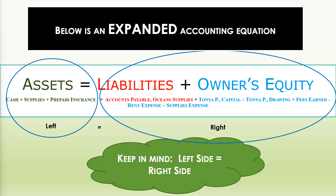You'll also see the liabilities accounts — accounts payable under liabilities — and then some owner's equity accounts. This is what the expanded accounting equation looks like. It's still the same: assets will still equal liabilities plus owner's equity.